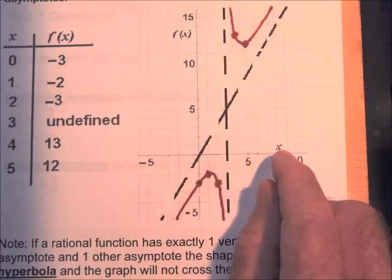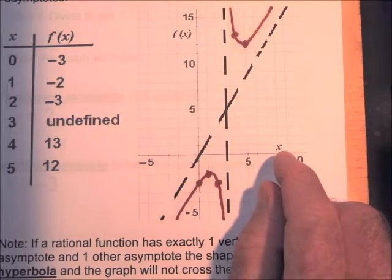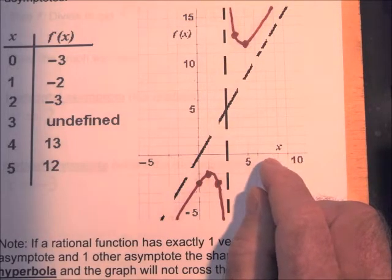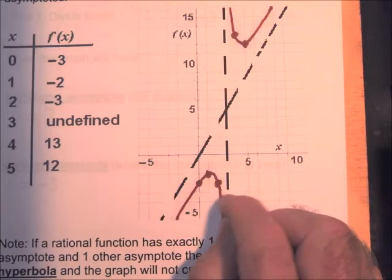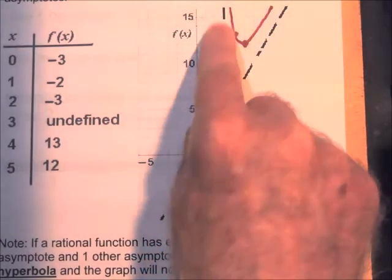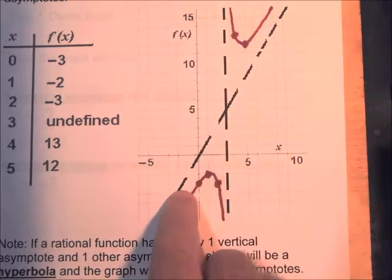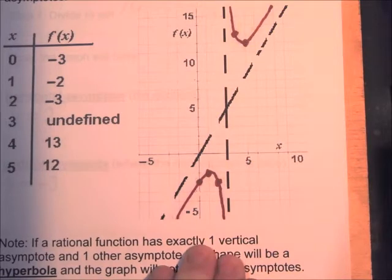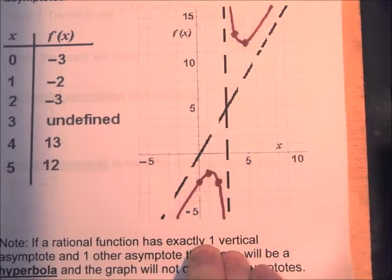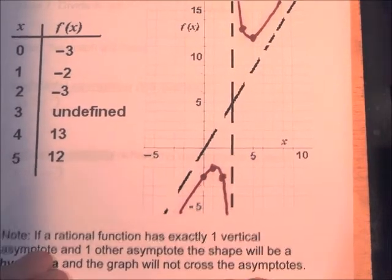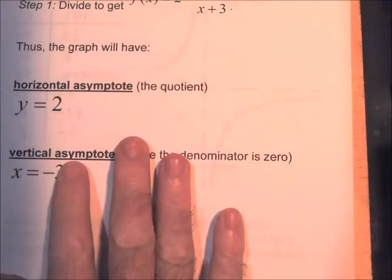For a hyperbola, the graph will not cross an asymptote. Some more complicated functions may actually cross an asymptote, but for a hyperbola — if there's one vertical and one non-vertical asymptote — the graph will be a hyperbola and it will not cross the asymptotes.